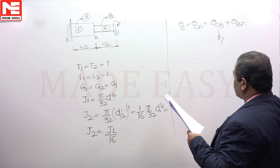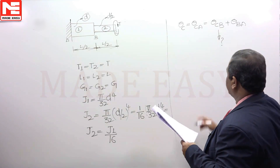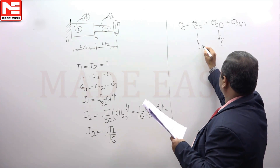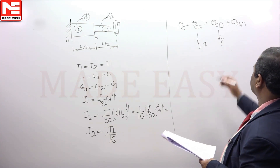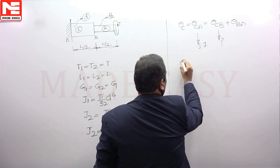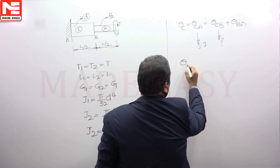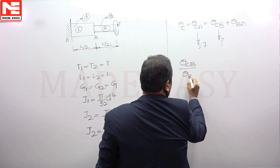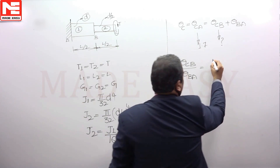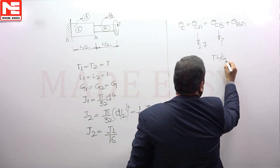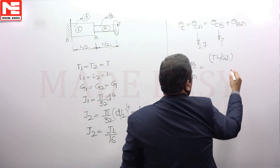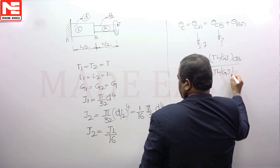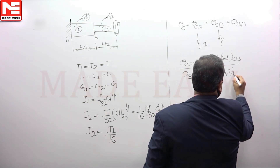In the question, the rotation of C with reference to A is given as 1.7 radians. Now we need to find the ratio of theta CB to theta BA. This ratio equals (T·L) / (G·J) of the CB portion divided by (T·L) / (G·J) of the BA portion.